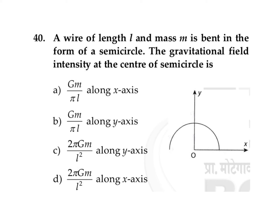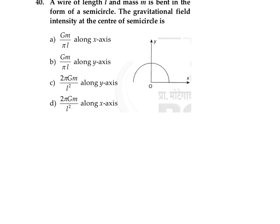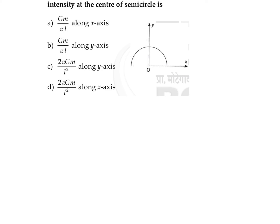The question is: a wire of length L and mass M is bent in the form of a semicircle — find the gravitational field intensity at the center of the semicircle. In the theory explanation we discussed how to find the gravitational field at the center of a circular arc. If you have any doubt about how we derived the equation, go watch that video on gravitational field strength due to a circular arc.